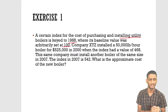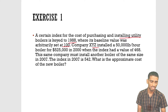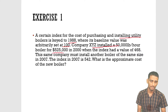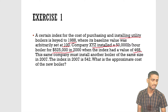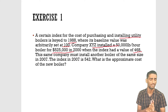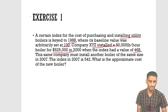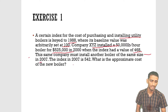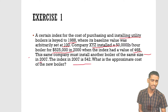Company XYZ installed a 50,000 lv per hour boiler at $525,000 in 2000, when the index had a value of 468. You can clearly see that here we have to apply the cost index model — focus on the values and what the question is demanding.